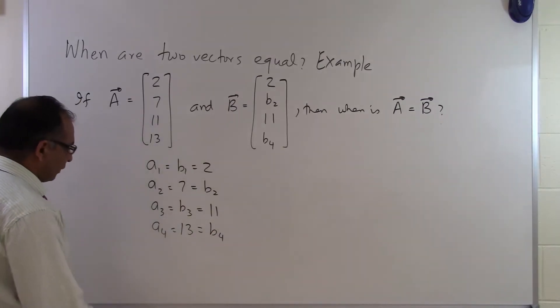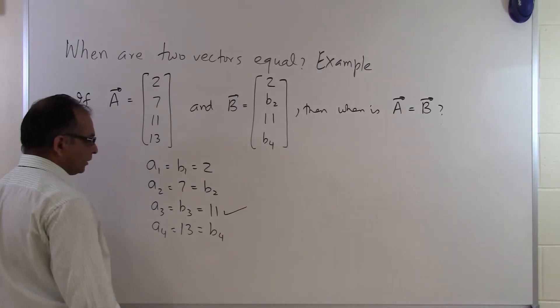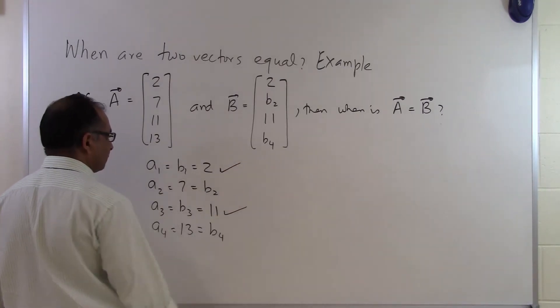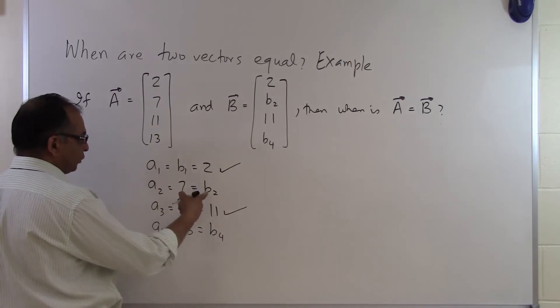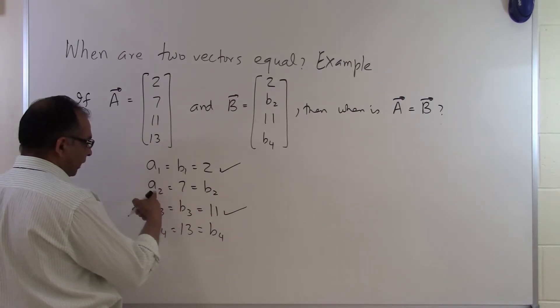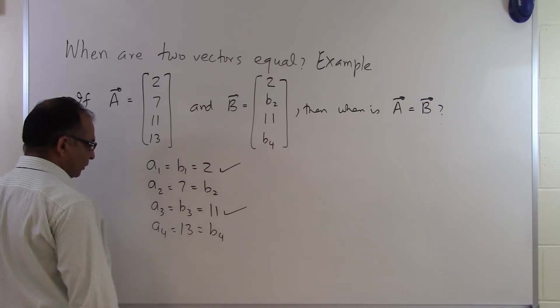A3 and B3 are the same, so that check is okay. A1 is the same as B1. But we're not given the value of B2. If we want the two vectors to be equal, A2 must equal B2, so B2 has to be 7.